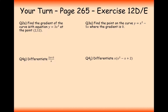Question 2A from exercise 12D or E: find the gradient of the curve y equals 3x squared at the point (2, 12). The first thing to do is dy/dx equals 6x. Then to work out the gradient, we move from the differential function to m and plug in x equals 2. The 12 is not involved. So 6 times 2 is 12 — the gradient is 12.